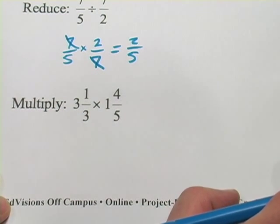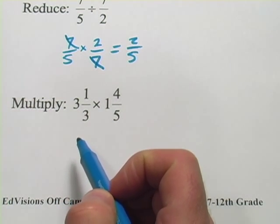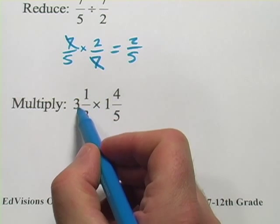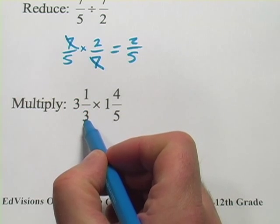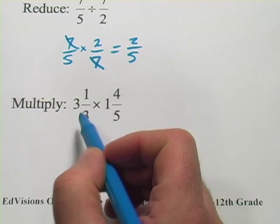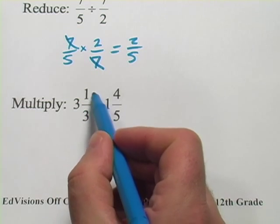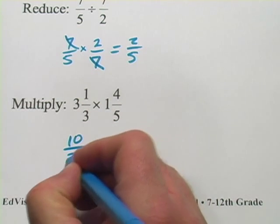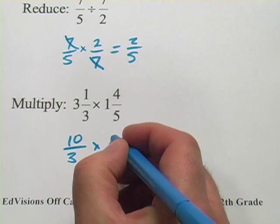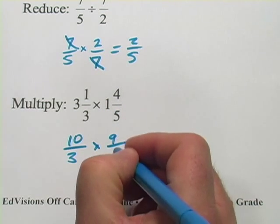Now this looks a little bit harder. We've got mixed numbers here. So you want to turn them into improper fractions first. Remember, we do that by taking the integer part, multiplying it by the denominator, adding it to the top, and putting it over the original denominator. So this would be 3 times 3 is 9 plus 1 is 10 thirds. And this one would be 1 times 5 is 5 plus 4 is 9 fifths.